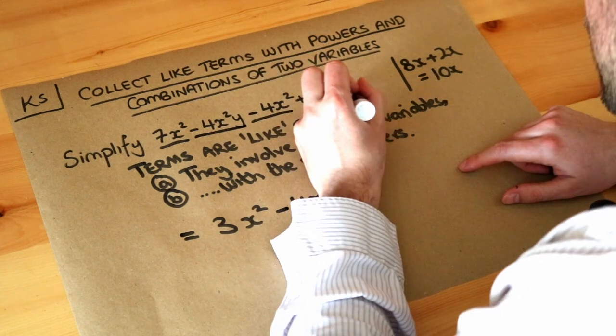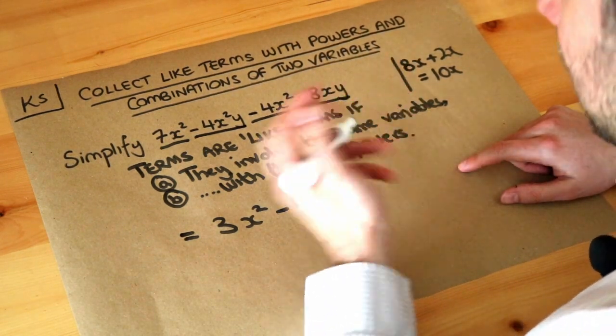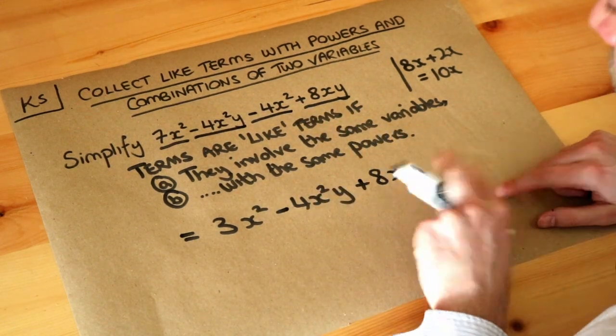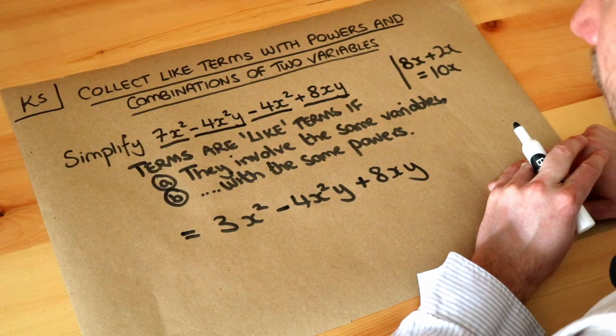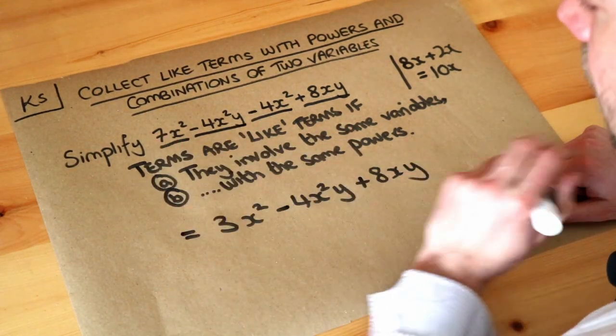And we're just left with the 8xy. That's the only term which has an x and a y without any powers, so again that has to go on its own. And we are done. We can't simplify that any further. We could always factorise it, but we just wanted to simplify it by collecting like terms here.